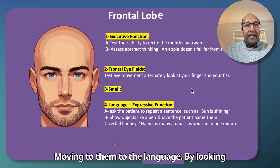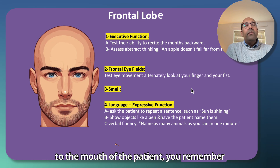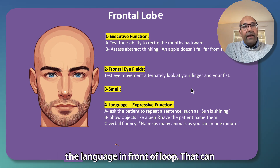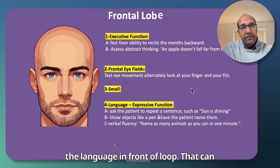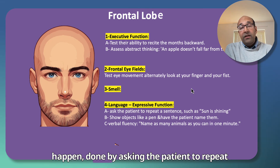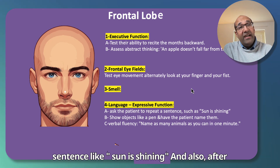Moving to language assessment. By looking at the mouth of the patient, you remember to ask about expressive dysphasia, which is the language component of the frontal loop. This can be done by asking the patient to repeat sentences such as 'the sun is shining.'